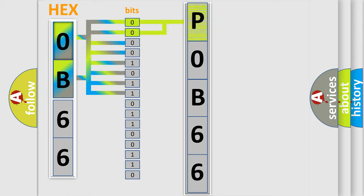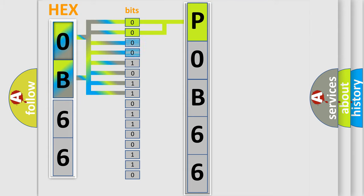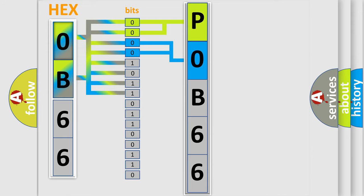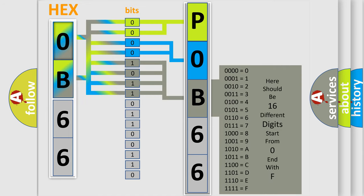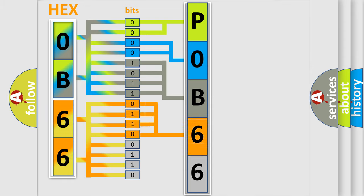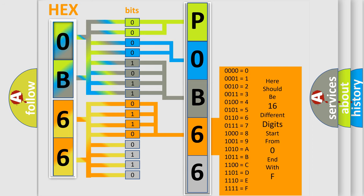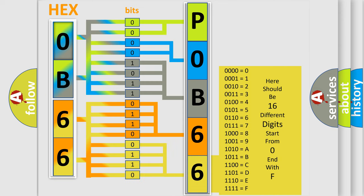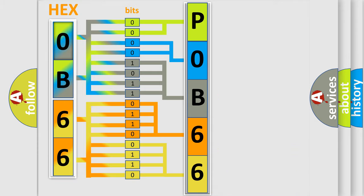By combining the first two bits, the basic character of the error code is expressed. The next two bits determine the second character. The last bits of the first byte define the third character of the code. The second byte is composed of a combination of eight bits — the first four bits determine the fourth character, and the last four bits define the fifth character. A single byte conceals 256 possible combinations. We now know how the diagnostic tool translates received information into a more comprehensible format.